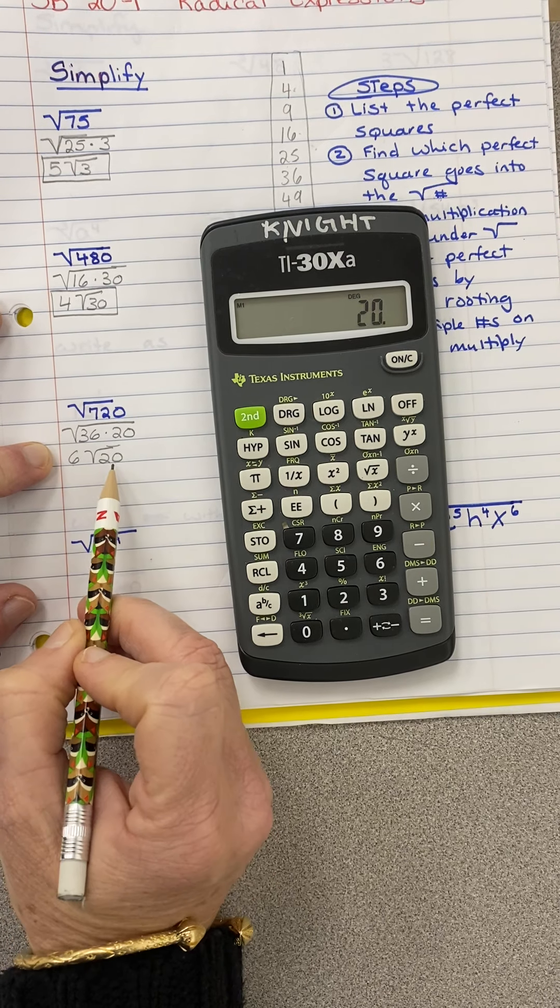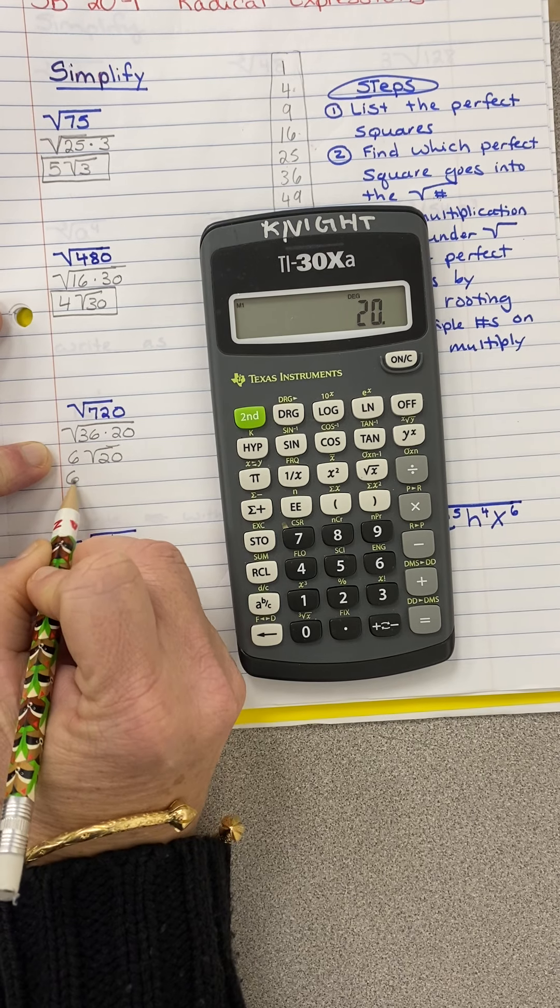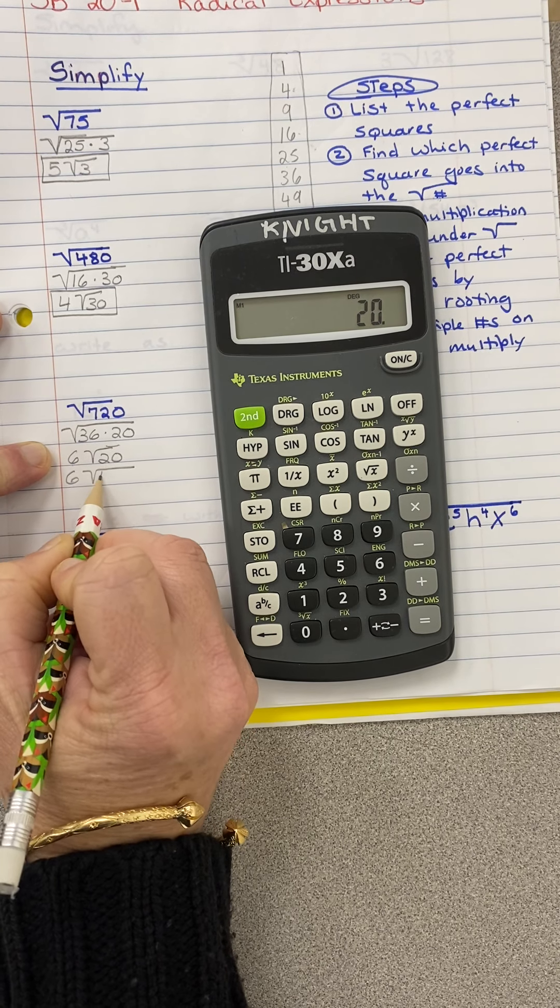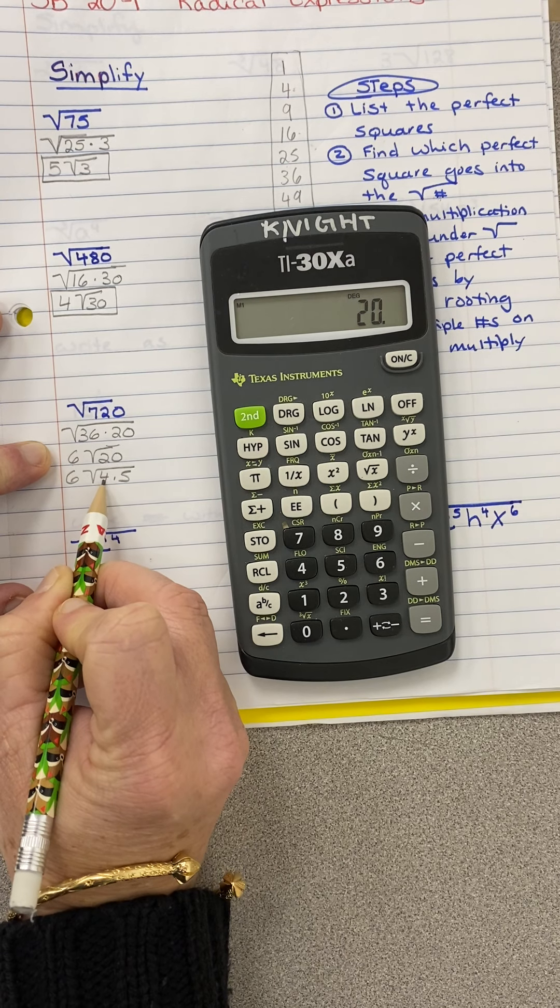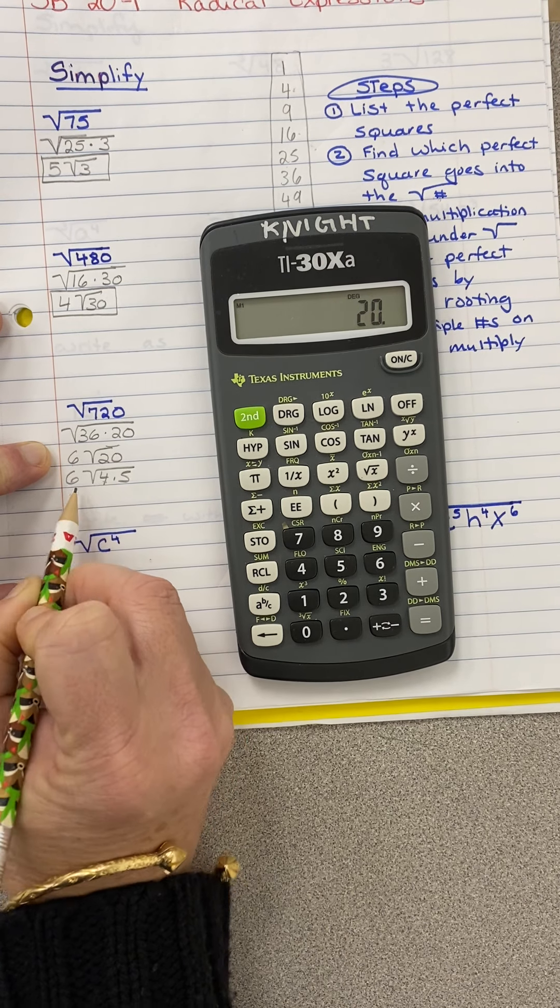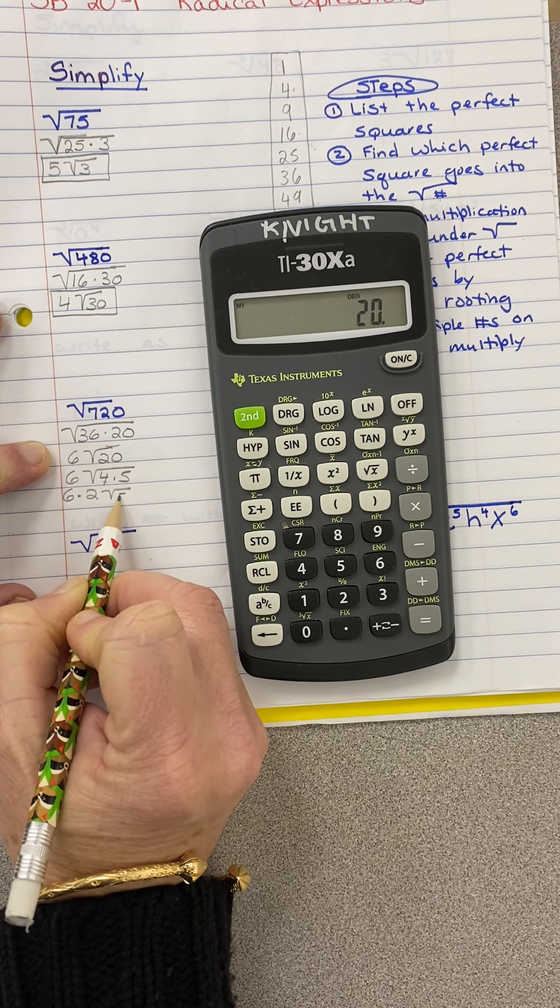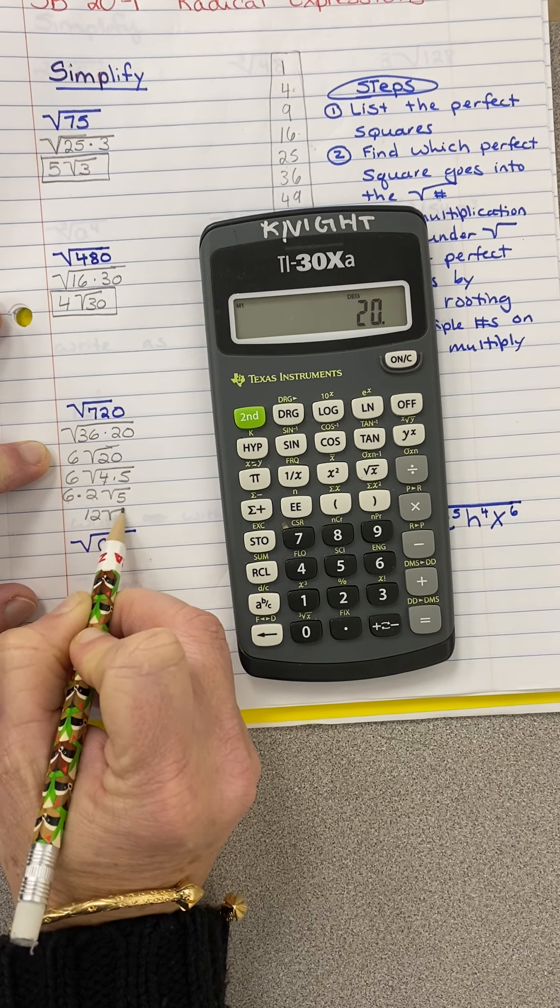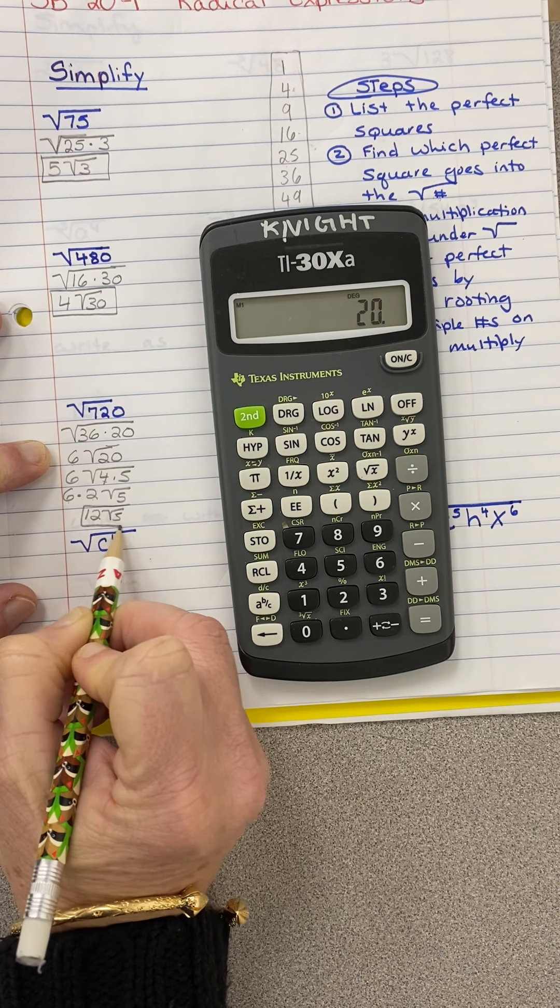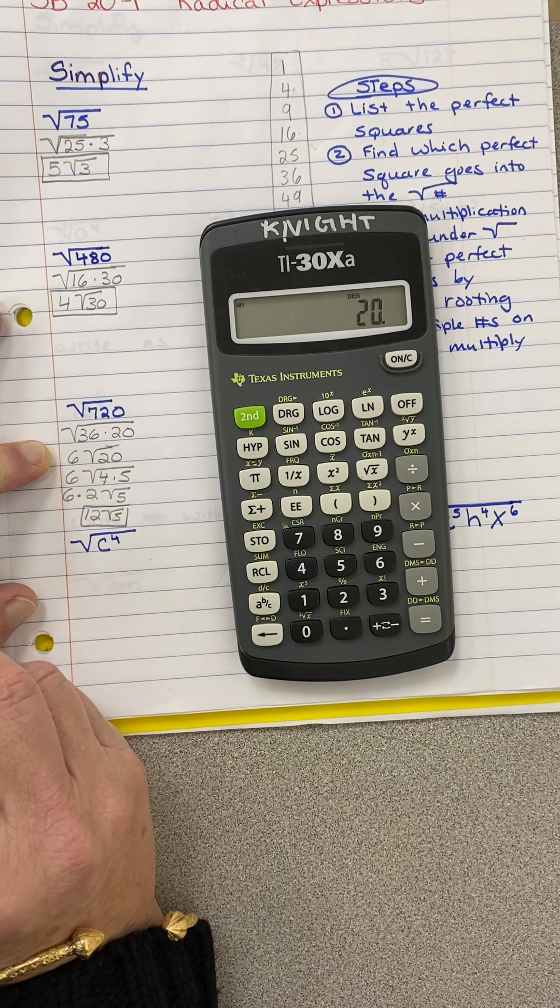So I already pulled out the 6. That's fine. I still look underneath here and I say is there a perfect square that goes into 20? Well, 4 does. 4 times 5 is 20. So now what's the square root of 4? It's 2. So the 2 pops out. And then I do 6 times 2 is 12, twelve radical 5. So when you start getting these numbers piling up on the outside, you have to end up multiplying them together.